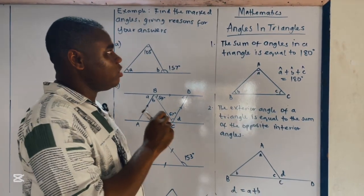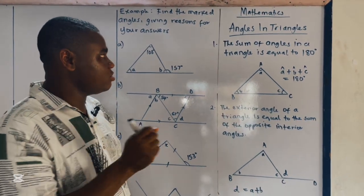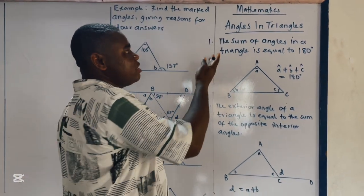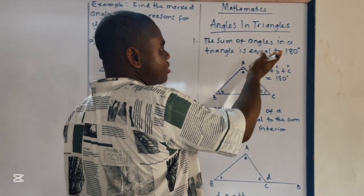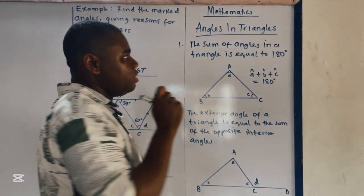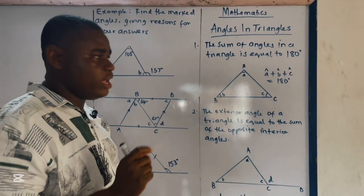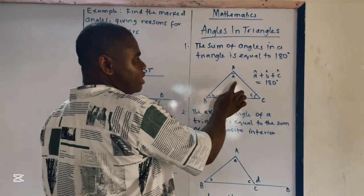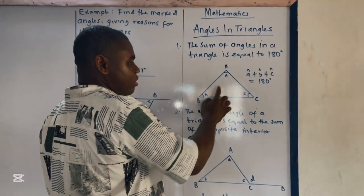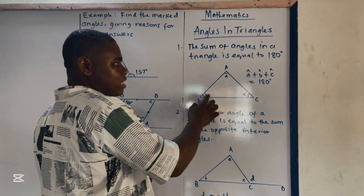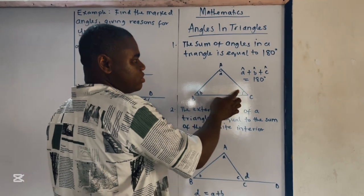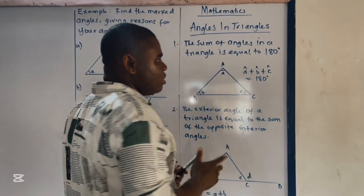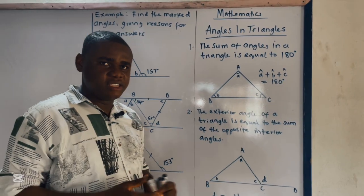The first rule is that the sum of angles in a triangle is equal to 180 degrees. So therefore, angle A plus angle B plus angle C sum up to 180 degrees.